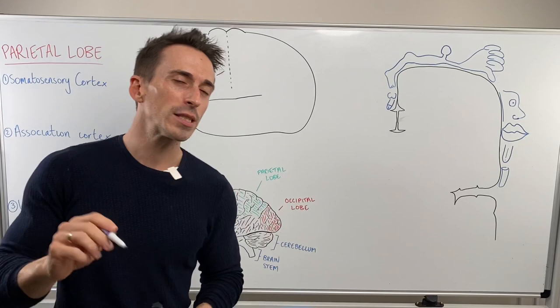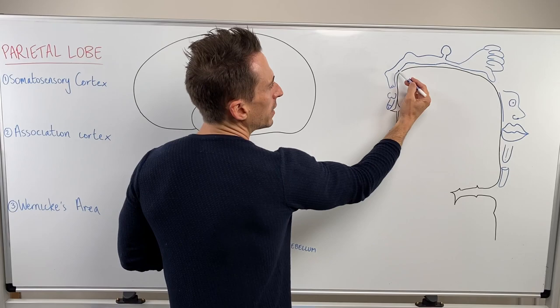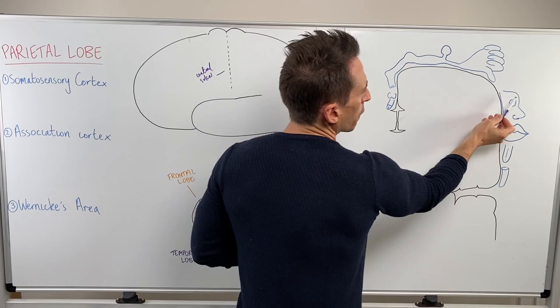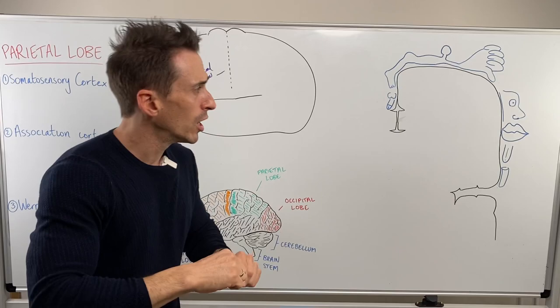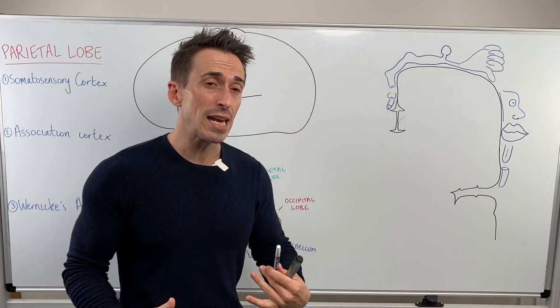I've drawn it up here and it looks very similar to that of the primary motor cortex, in which we have genitalia, feet, legs, bum, back, neck, head, arm, hand, face, lips, tongue, pharynx, and larynx. Importantly, you can see that even though it's a map of the body, it's not really in the order and fashion that we see the body in, and also some areas are enlarged — areas like the hand and the lips.